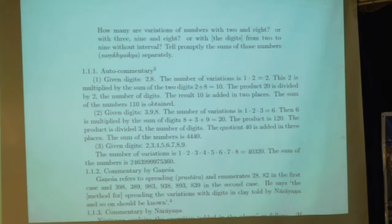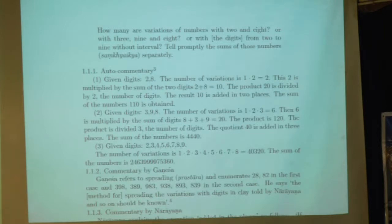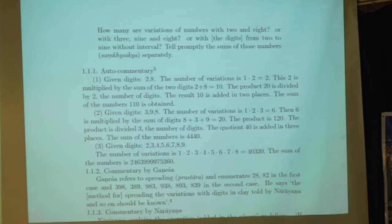Baskara's own commentary: given digits 2 and 8, the number of variations is 1 × 2 = 2. This 2 is multiplied by the sum of the 2 digits; the sum is 10. The product 20 is divided by 2, the number of digits. The result is added in two places. The sum of the numbers (Sankhya) is 110. In the second case, given digits 3, 9, 8: the number of variations is 1 × 2 × 3 = 6. Then 6 is multiplied by the sum of digits 8 + 3 + 9 = 20. The product is 120, divided by the number of digits 3. The quotient 40 is added in three places. The sum of the numbers is 4440.